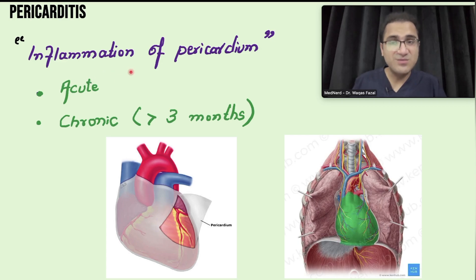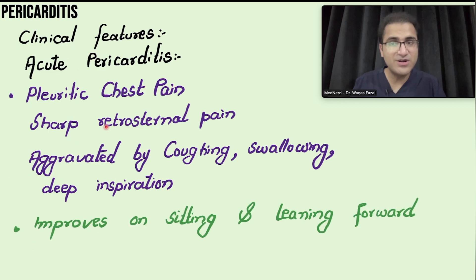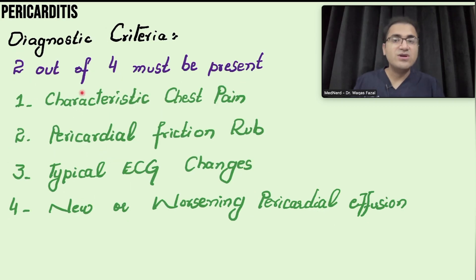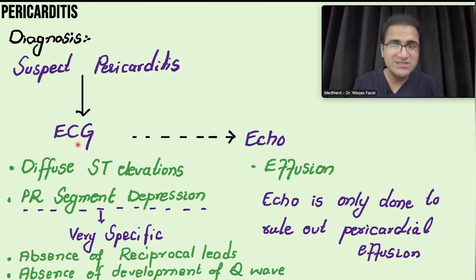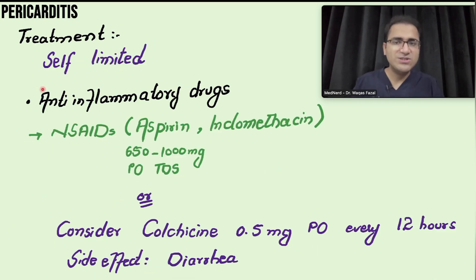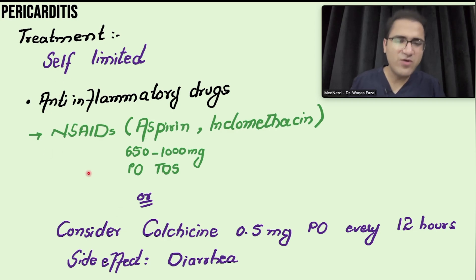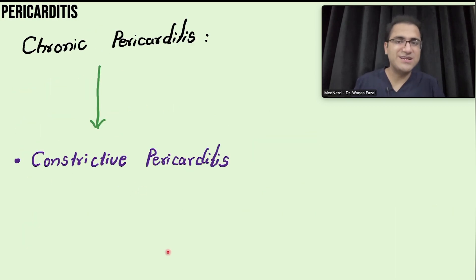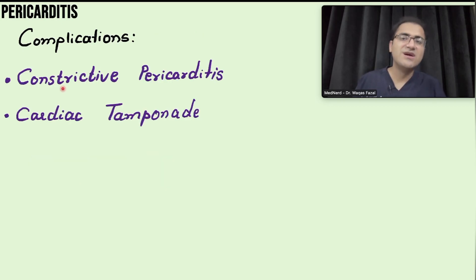In summary: pericarditis is inflammation of the pericardium, most commonly caused by viral infections; MI and other causes are also important. It presents as pleuritic chest pain worsened by coughing, swallowing, and deep inspiration. Two out of four diagnostic criteria must be fulfilled. ECG shows diffuse ST elevation; PR segment depression is very specific. Echo is done only to rule out effusion. ECG changes go through four stages. Treatment is largely self-limiting — NSAIDs or colchicine for pain and inflammation; steroids for uremia, connective tissue disease, or autoimmune causes. Restrict physical activity until CRP normalizes.